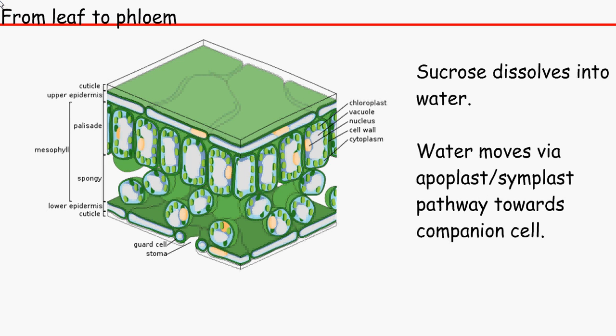So first of all, loading the sucrose onto the phloem. First of all, the sucrose dissolves into the water. That's the first thing. After it being photosynthesised from the source cell. Source cells are basically where the sucrose is loaded from. So for example, the sucrose is loaded from a leaf cell. So therefore, a leaf cell is a source.